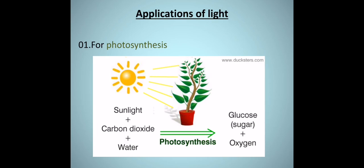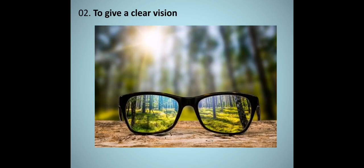These are the applications of light. First, for photosynthesis — plants use light energy to produce their food by photosynthesis. Second, to give clear vision — we need light to see clearly. In dark conditions we cannot see objects clearly, but when light is present, objects can be observed very clearly.